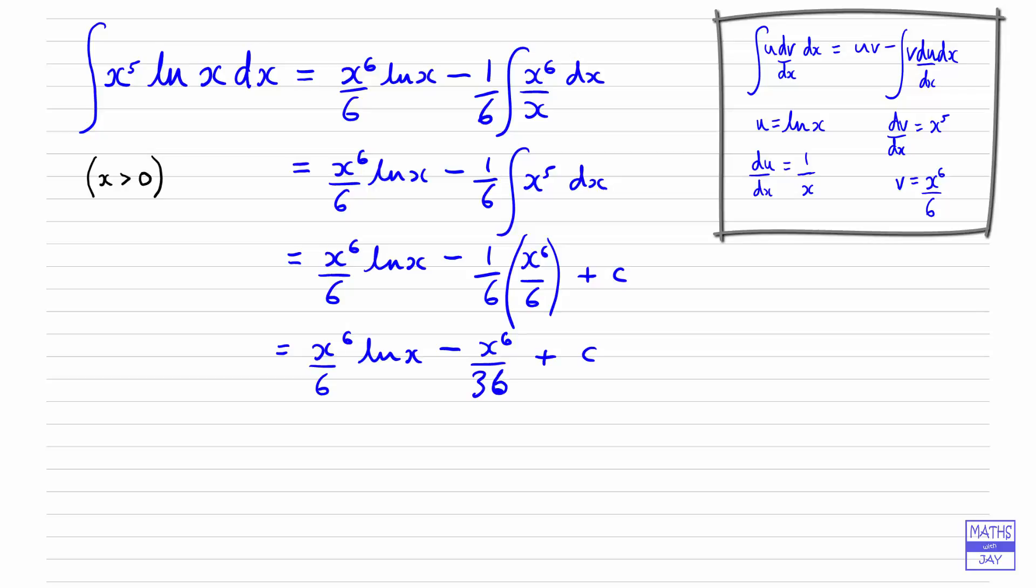And you might like to take the x to the power of 6 over 36 outside a bracket to give us 6 log x minus 1 inside the bracket, and then add on the constant of integration.